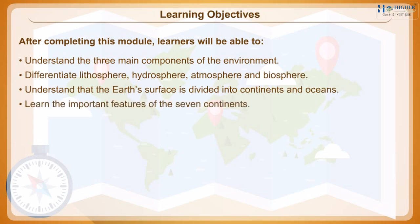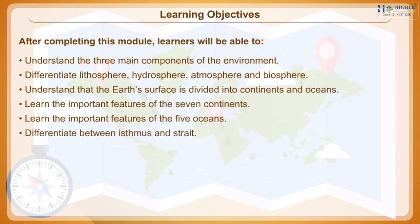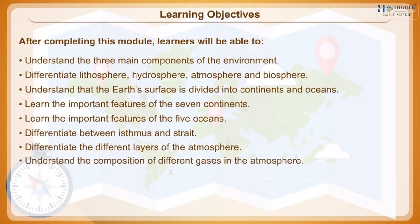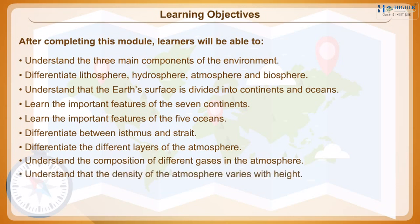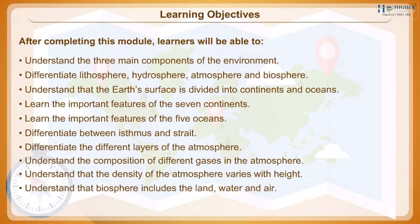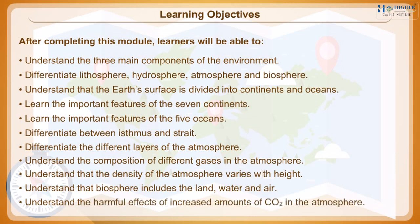Learn the important features of the seven continents and the five oceans. Differentiate between Isthmus and Strait. Differentiate the different layers of the atmosphere. Understand the composition of different gases in the atmosphere, that the density of the atmosphere varies with height, that the biosphere includes land, water and air, and understand the harmful effects of increased amounts of CO2 in the atmosphere.